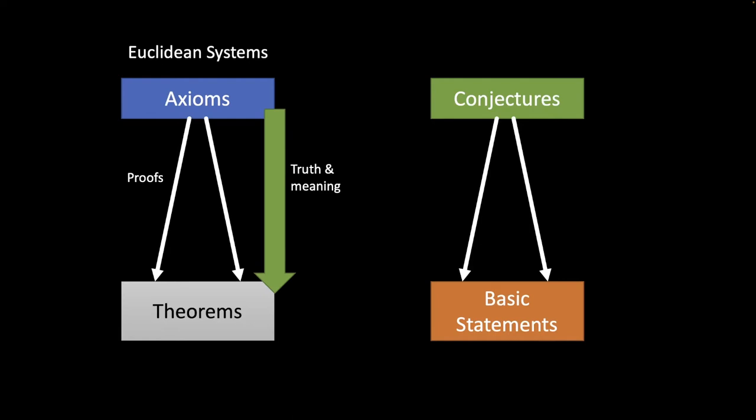Now on this account, on Lakatos's account here, truth doesn't so much derive in this downward direction as it goes up from the basic statements to the conjectures. But we know that when we're talking about a deductive system, you can't quite transmit truth that way from the particular to the general. That's the problem of induction when we're talking about empirical science, and it sort of applies here too. But what you can transfer, this is the point that Popper made his career on in a way, you can transfer falsity in that direction. If you derive a basic statement, which you know to be false, then what you have is a kind of refutation of the conjecture.